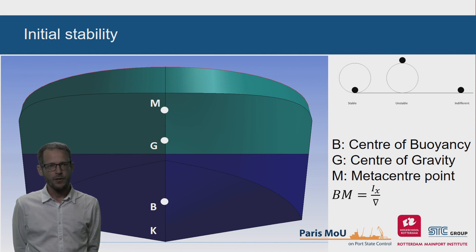When GM is zero, G and M are on the same position, and the GZ will also be zero. After a small inclination of the ship, the ship will remain in the heeled position, which is an indifferent stability.